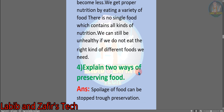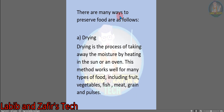Number 4: explain two ways of preserving food. Answer: spoiling of food can be stopped through preservation. There are many ways to preserve food. A, drying: drying is the process of taking away the moisture by heating in the sun or an oven. This method works well for many types of food including fruit, vegetables, fish, meat, grain, and pulses.